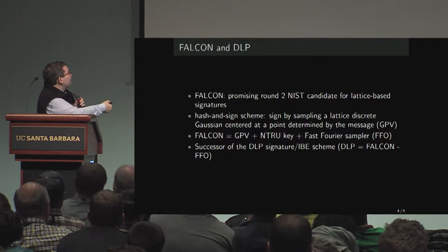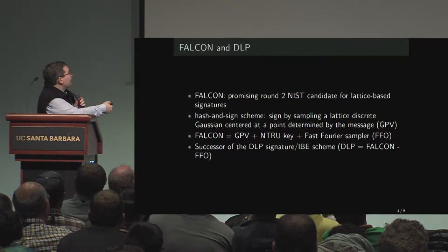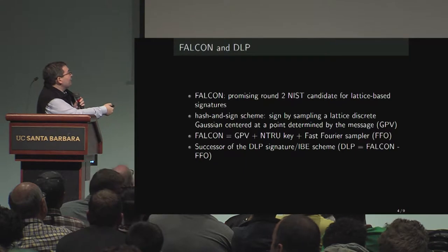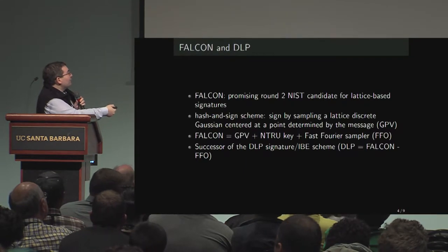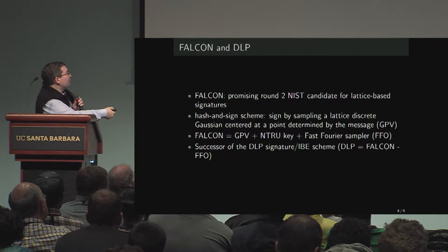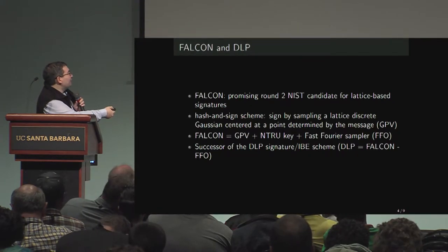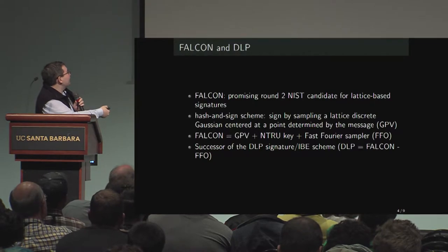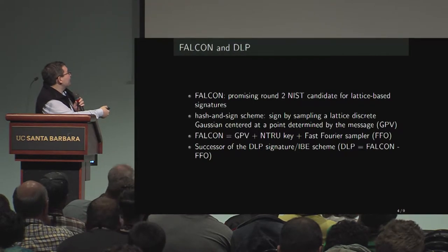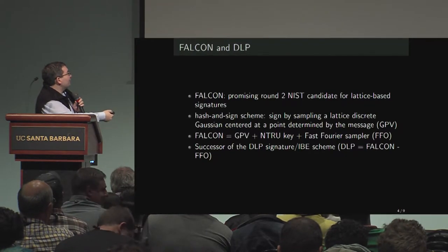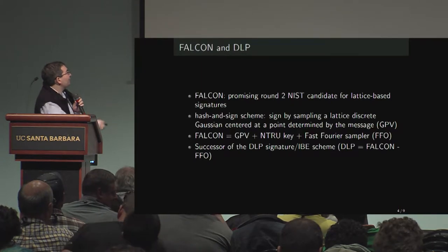Together with an NTRU key and a fancy technique to speed it up and make the sampling quasi-linear, it's a successor of an older scheme called DLP, which is basically Falcon minus this fancy technique.